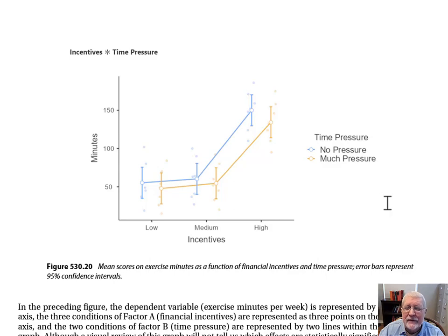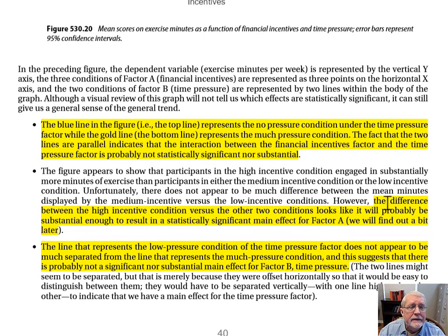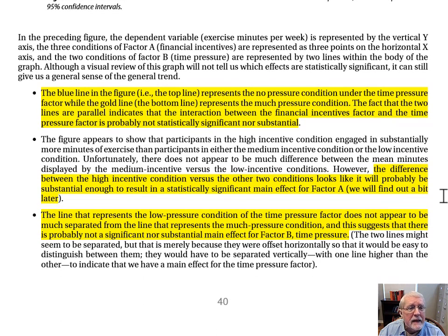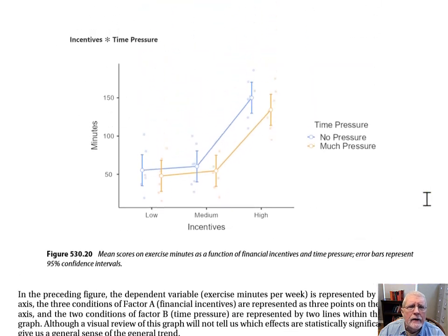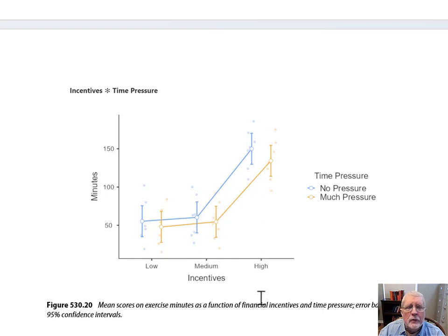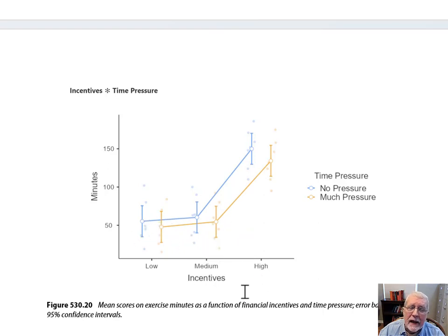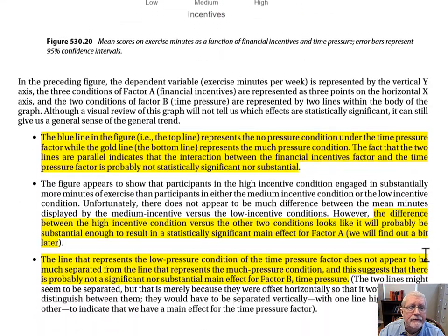We won't know for sure until we look at the results of the ANOVA. The second bullet point says: the difference between the high incentive condition versus the other two conditions looks like it'll probably be substantial enough to result in a statistically significant effect for Factor A. Notice the mean minutes of exercise displayed by the high incentive people — it looks like it might be significantly different from the mean displayed by the medium and low incentive people. We don't know yet, but we might have a main effect for financial incentives.